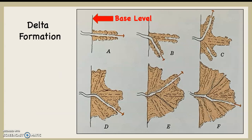This diagram shows delta formation. You can see that the red arrow says base level, pointing at that black line. What's happening is the water in A is coming from the left and it reaches base level, which is the ocean. As it does that, it deposits its material because the river slows down and stops moving, which means all of its material is going to be deposited.